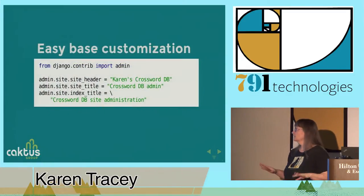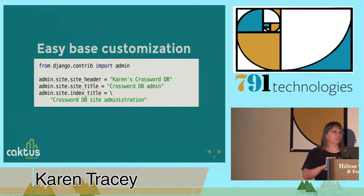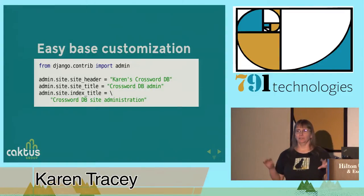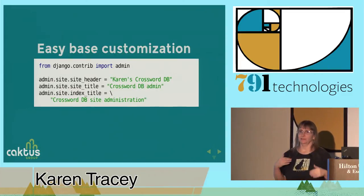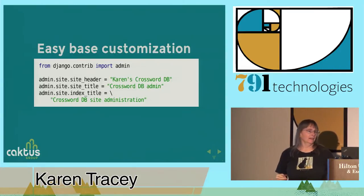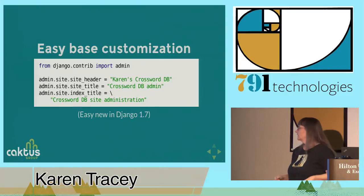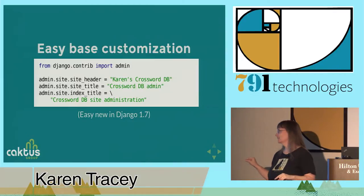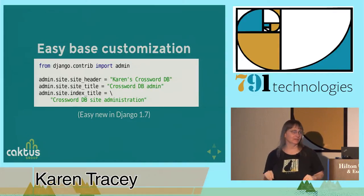Let's start with some basic easy customization. On those previous screens everything said 'Django administration.' What you can do is say it's not Django administration, it's my site administration. For my crossword puzzle database, there are three variables you can set — just by importing admin from django.contrib and setting the site header, site title, and index title to something specific to your site. This easy part is new in Django 1.7. Previously you had to copy an admin template and configure it, but now it's easier.